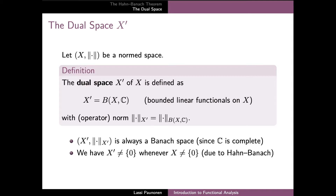As our first observation, the dual space is always a Banach space even if the space X is itself not complete, since the space of bounded operators is complete whenever the image space — in this case the complex numbers — is complete. Furthermore, the Hahn-Banach theorem implies that the dual space is non-trivial whenever X itself contains non-zero elements.